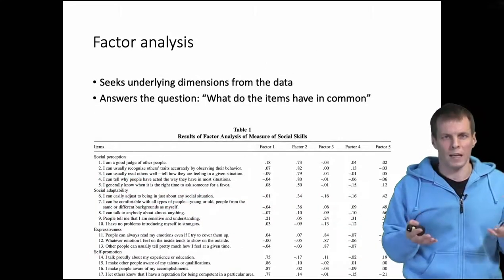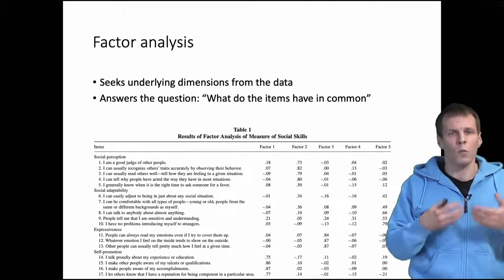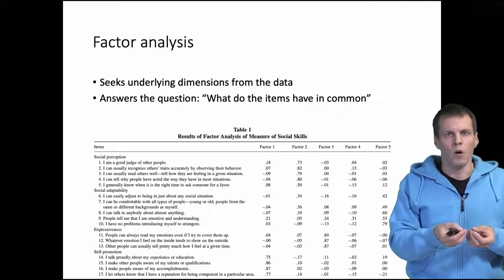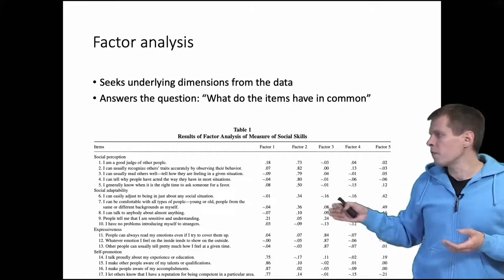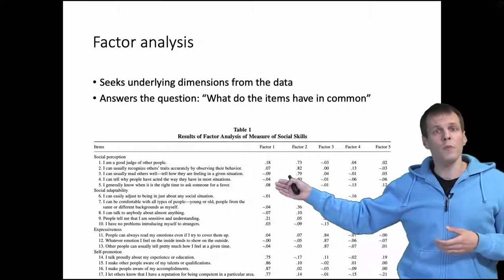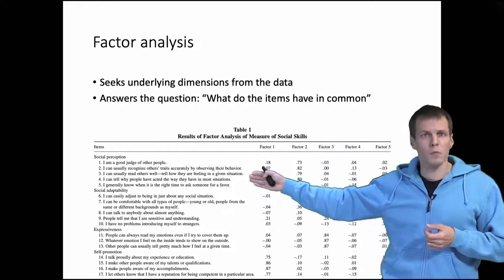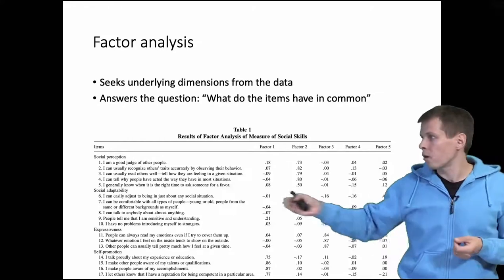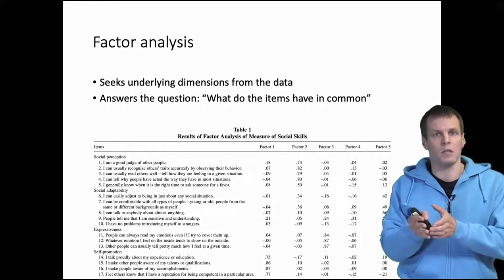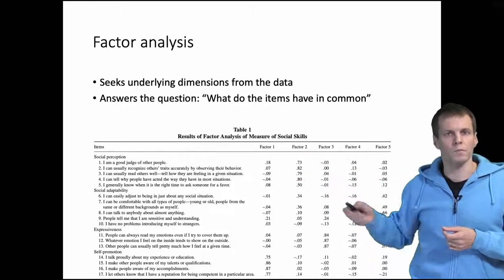Factor analysis is a tool for validating these multiple item measures. This is a table of factor analysis results, and what these results tell us is which items go together, which items have something in common, or if there are any underlying dimensions in the data. So the idea of factor analysis here is that if we have five measurement scales, then these items should be grouped empirically according to the things that they're supposed to measure. So these five items are supposed to measure social perception. We say that conceptually they have in common that they all measure social perception. Then we look at do they have something in common also empirically, and factor analysis does that for us.